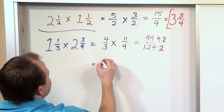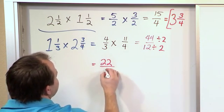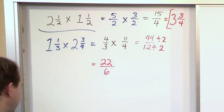What would that give us? 44 divided by 2 is 22. 12 divided by 2 is 6. So we're presented with this fraction.